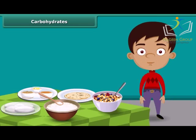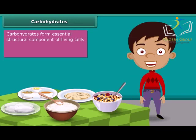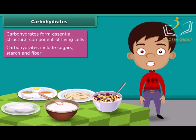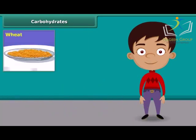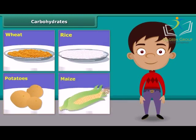First, carbohydrates. Carbohydrates form an essential structural component of living cells. They are the main source of energy for animals. Carbohydrates include sugars, starch, fiber, etc. They are mainly found in wheat, rice, potatoes, corn and maize.